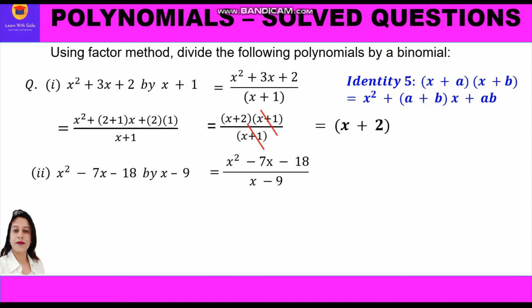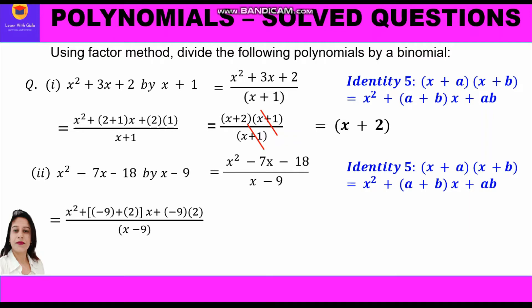Identity 5: (x + a)(x + b) = x² + (a+b)x + ab. We have to think of two numbers such that their sum is minus 7 and their product is minus 18. We know that minus 9 plus 2 is minus 7, and minus 9 times 2 is minus 18. So a is minus 9 and b is 2.